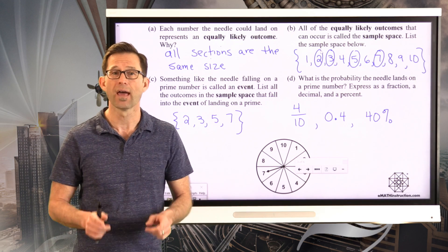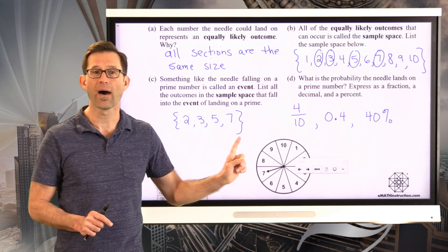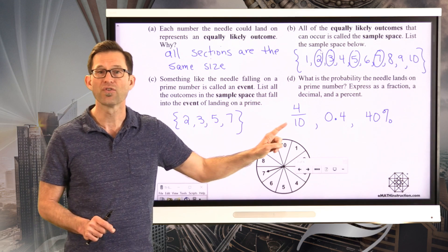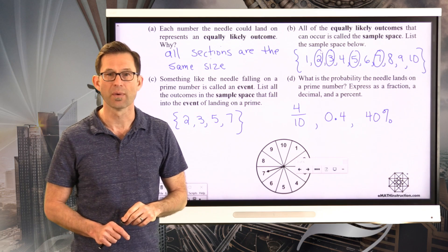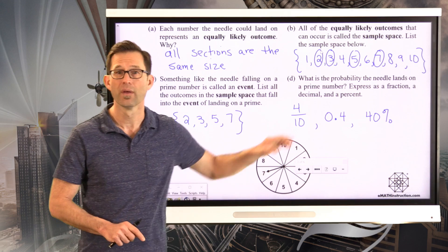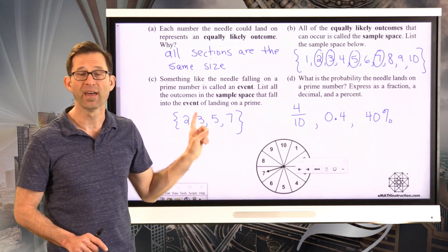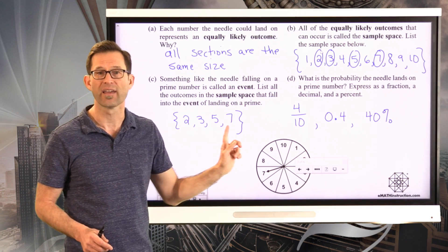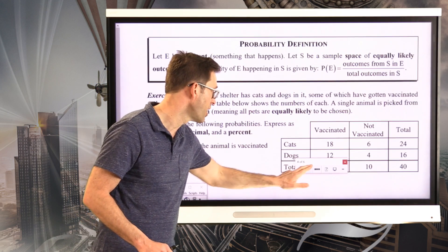Probability measures chance by looking at all the outcomes lying in the event we care about compared to all the equally likely outcomes in the sample space. Key terminology: equally likely outcomes; the sample space — a list of all equally likely outcomes; an event — something we're trying to find the probability of; and the equally likely outcomes that fall in that event.